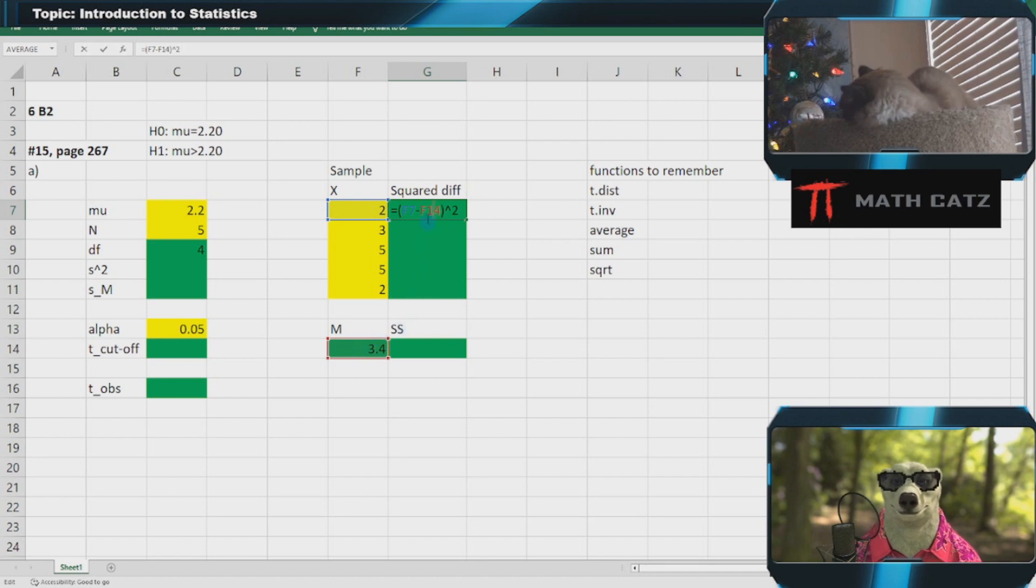I want this cell to always be used as I copy this formula down, so I press F4 to fix the location. When I drag it down, the blue cell moves with me relatively, but the red one stays as it should, always using the appropriate raw score but the mean is always the same.